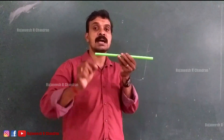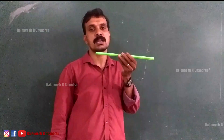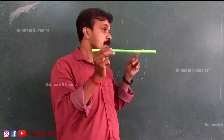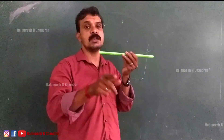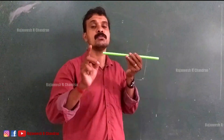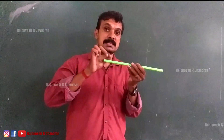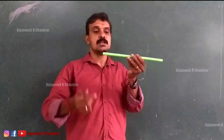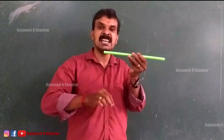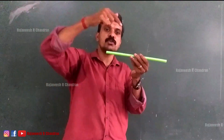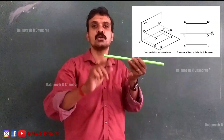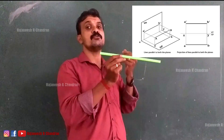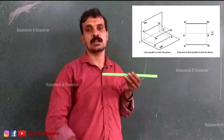And the top view will be a line parallel to XY of shorter length. Since the line is parallel to VP, the front view will show the true length and the top view will be a line parallel to XY of shorter length. Now, this line is also parallel to HP. Since the line is parallel to HP, the top view will show true length and the projection on VP will be a line parallel to XY of shorter length.